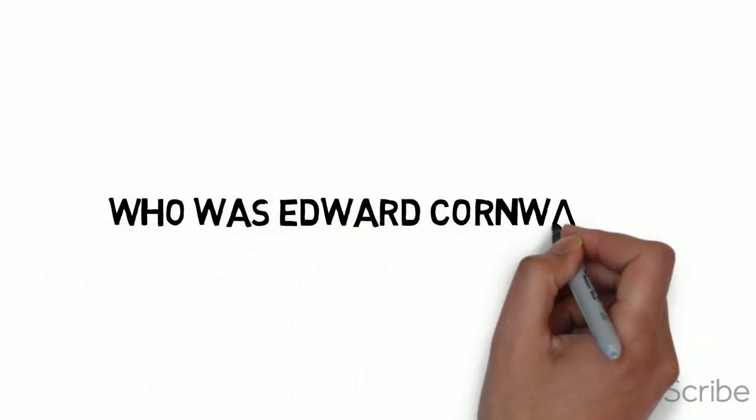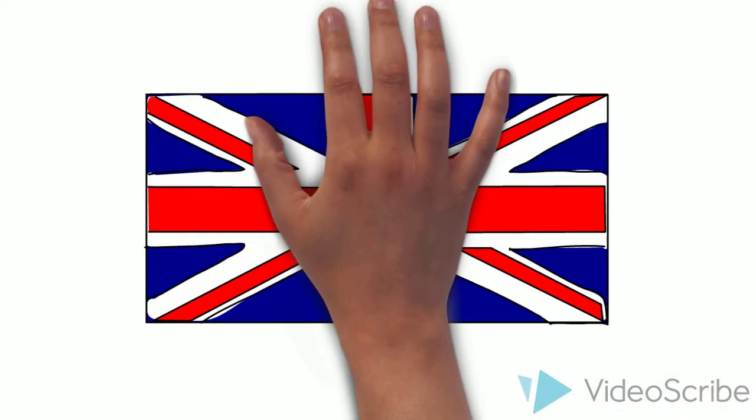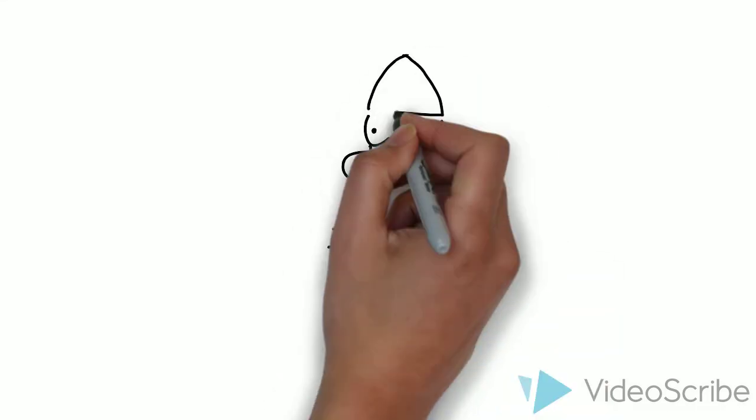So who exactly was Edward Cornwallis? Well, born in London, England in 1713, as the youngest of six, this nobleman began his career in the military.